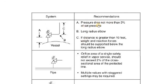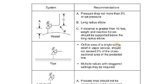Relief installation practices specify that pressure drop on the inlet should not be more than 3% of set pressure. Use a long radius elbow. If the distance C is greater than 10 feet, weight and reaction forces should be supported below the long radius elbow. In such an arrangement, the pressure drop constraint matters because a large distance can create back pressure effects.